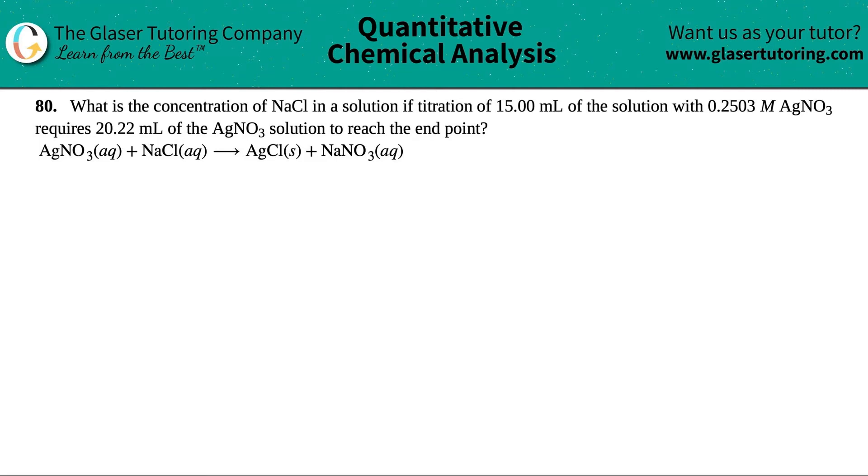Number 80. What is the concentration of sodium chloride, which is NaCl, in a solution if titration of 15 mL of the solution with 0.2503 molarity silver nitrate, which is AgNO3, requires 20.22 mL of the silver nitrate solution to reach the endpoint?